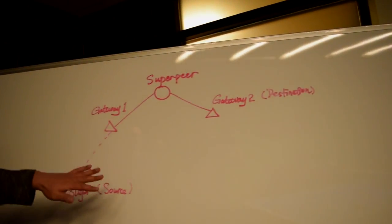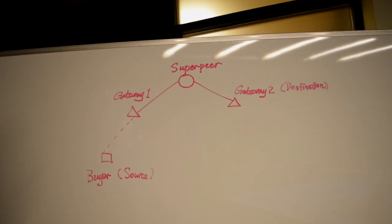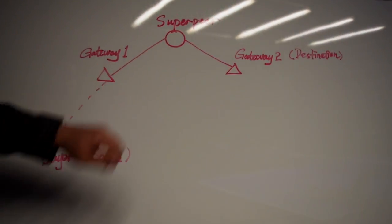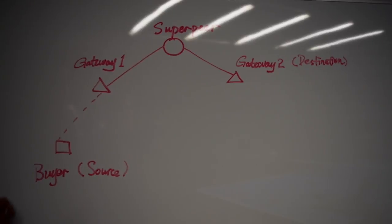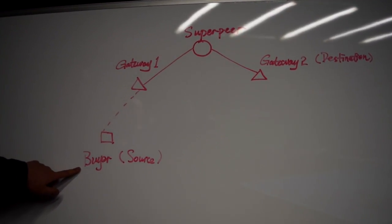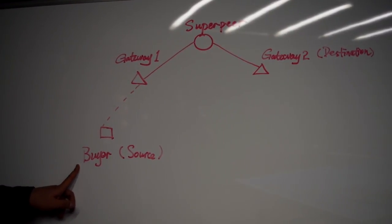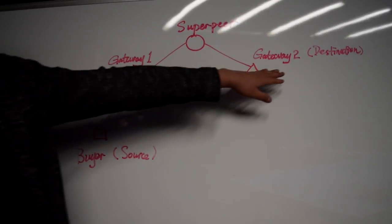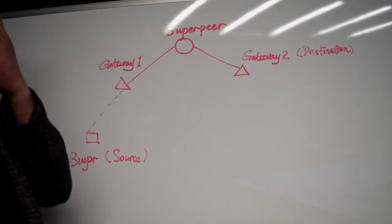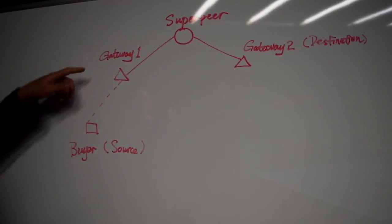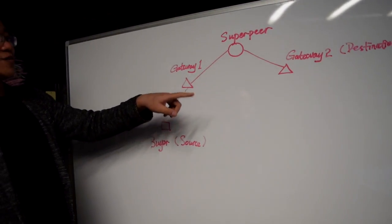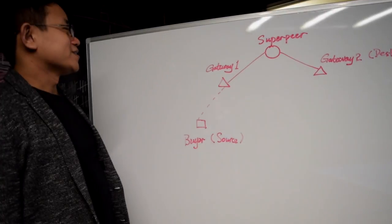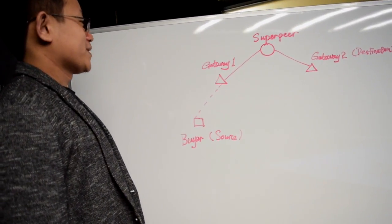Later on, we will create a topology shown on this whiteboard. We have two gateway peers, and each of them has internet access. We will let a buyer who does not have internet access transmit a packet to the destination node, gateway peer 2.